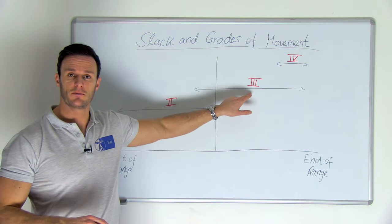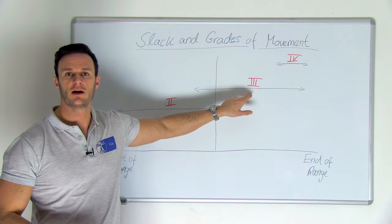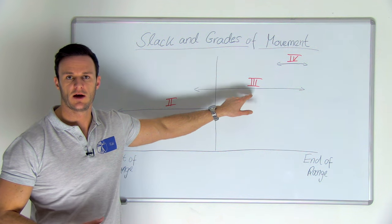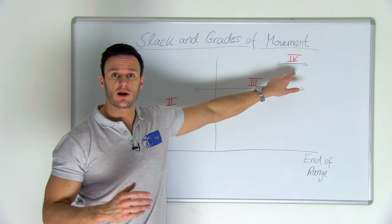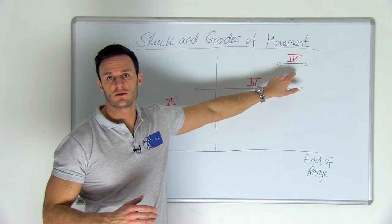Grade 3: large amplitude from mid range until the maximal end range. And Grade 4: short amplitude always in or close to the end range.